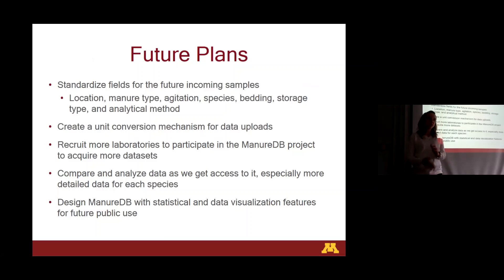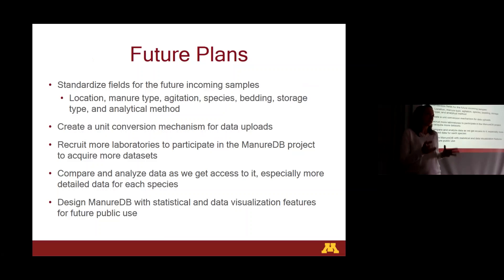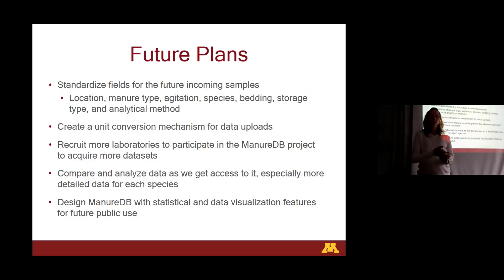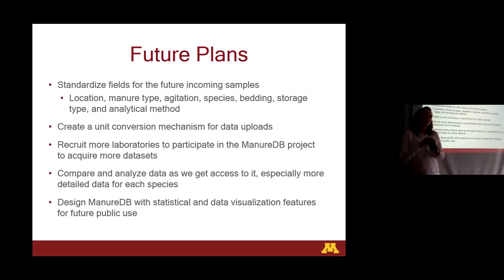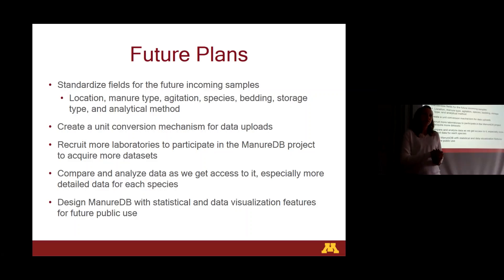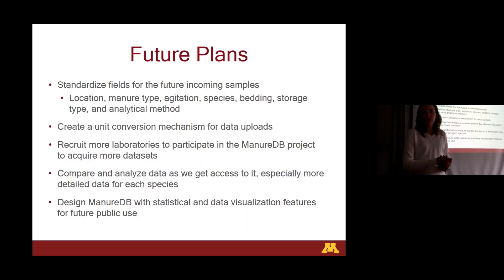Our future plans involve trying to standardize these fields as much as we can. We're making an ideal template with fields like manure type, is there agitation, species, bedding, storage type, and how they're analyzed — because there are multiple methods some of these things are analyzed by. We also need to figure out a unit conversion mechanism for data uploads. We have a very simple one-way conversion right now, but we know that's not going to probably be the case, and we don't want a person to have to do all these unit conversions by hand.